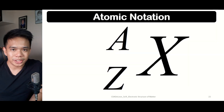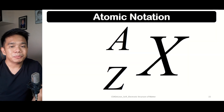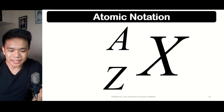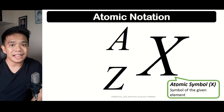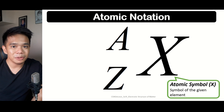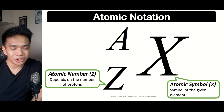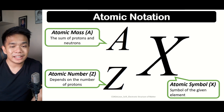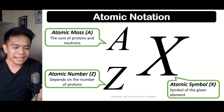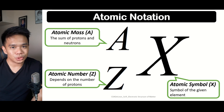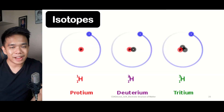Now let us go to atomic notation — the manner of presenting the different atomic particles within a given atom. It is represented by the letters A, Z, and X. X represents the atomic symbol, which can be found in the periodic table of elements. Z represents the atomic number, determined by the number of protons. A is the atomic mass, which is the sum of the protons and neutrons.